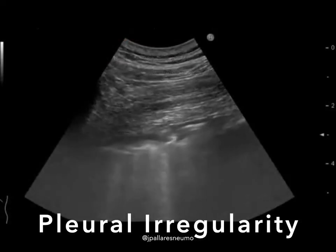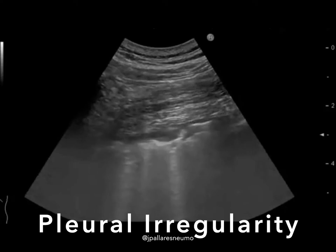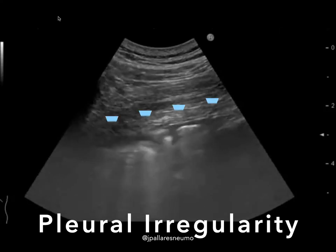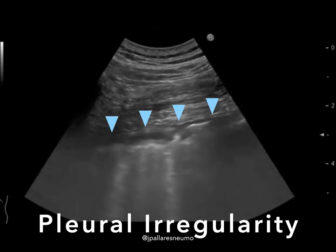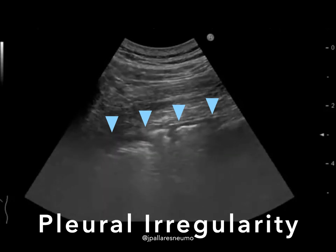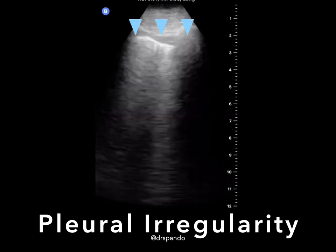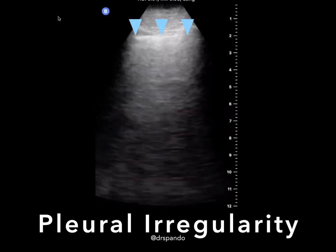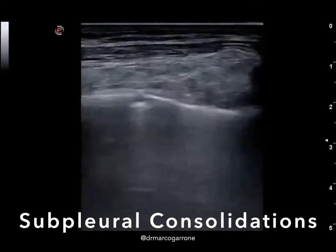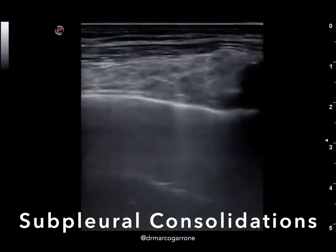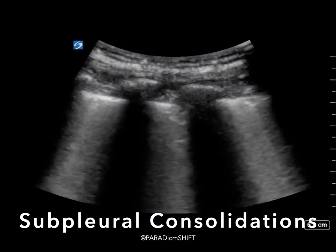Lung ultrasound findings described thus far include abnormalities of the pleura. Patients can get irregularity of the pleural line, as this example demonstrates, or thickening of the pleural line. Here's another clip of pleural irregularity and thickening. Other pleural-based abnormalities include the development of subpleural consolidations, like this example highlighted in orange, or this example of a slightly larger subpleural consolidation.